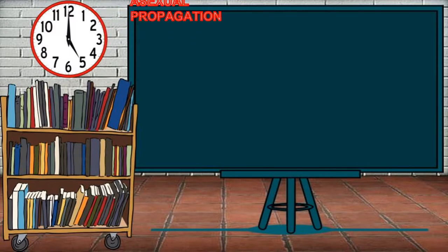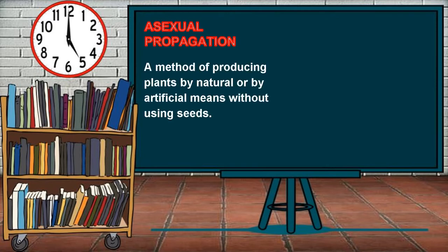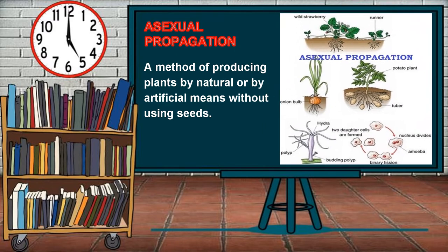The second method of plant propagation is asexual propagation. It is a method of producing plants by natural or artificial means, without using seeds.